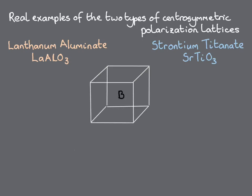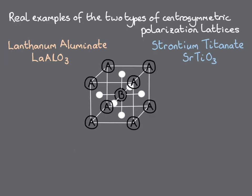Both lanthanum aluminate and strontium titanate have the ABO3 perovskite structure, in which the B-site cation, aluminum or titanium, is surrounded by an octahedron of oxygens, with the A-site cation, lanthanum or strontium, at the unit cell corners.